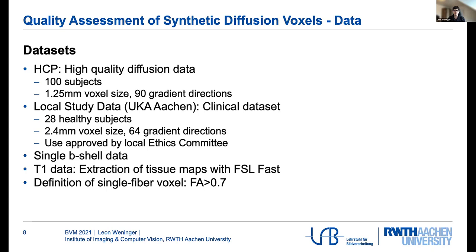To get the tissue maps, we rely on the T1-weighted MRI image and extract these tissue maps automatically with a tool from FSL called FAST. To determine single fiber voxels, we base ourselves on the FA values and select those voxels where the FA value is larger than 0.7.